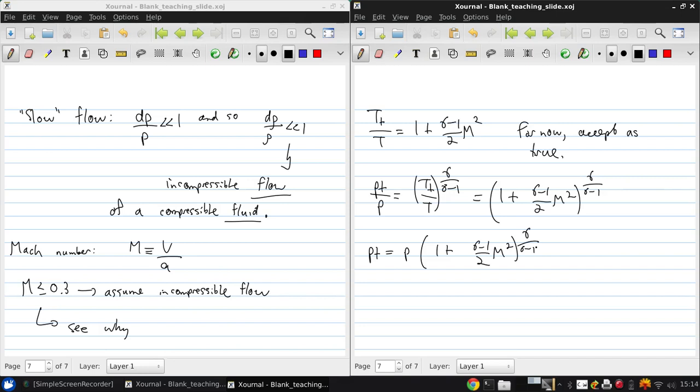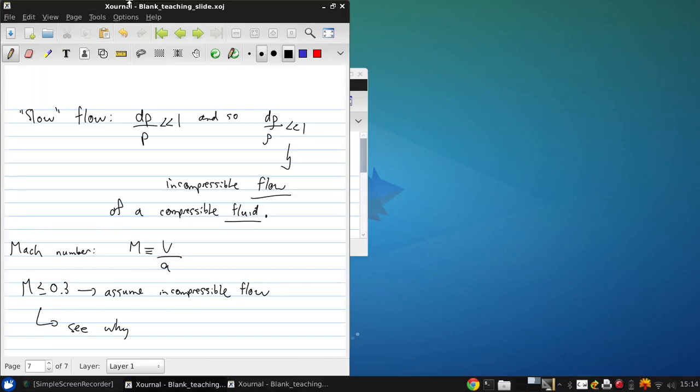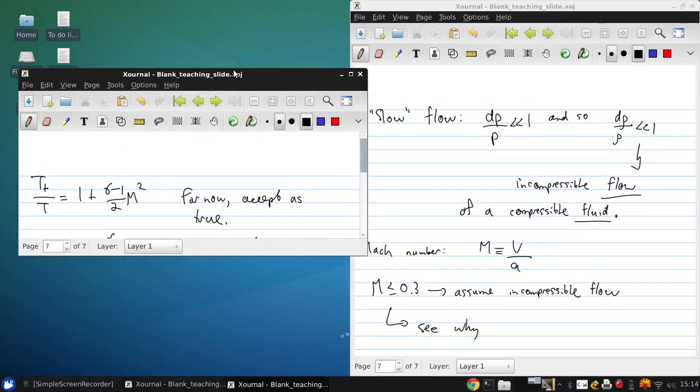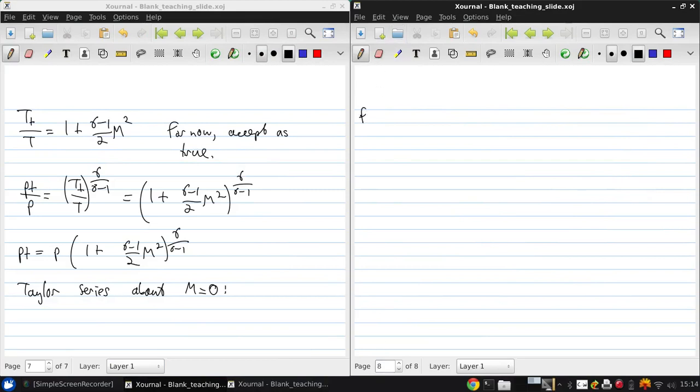And we can write this as the stagnation pressure to the static pressure times (1 plus (gamma minus 1) over 2 Mach number squared) to the power of gamma over (gamma minus 1). Now, if we set up a Taylor series expansion, which hopefully you remember from calculus, expanding about Mach number equal to 0.